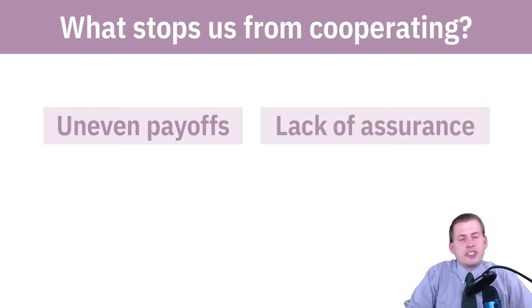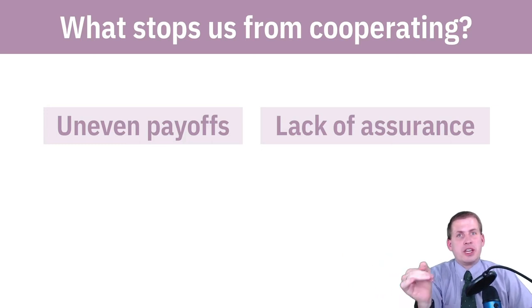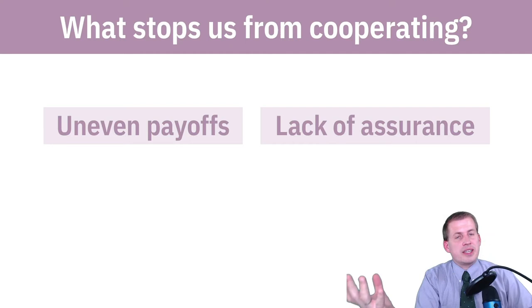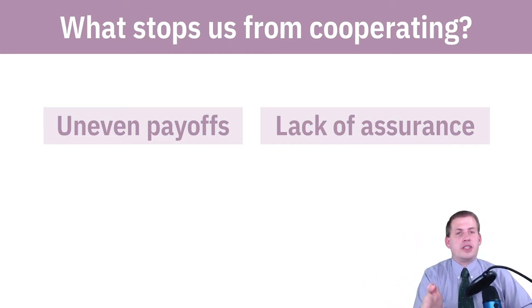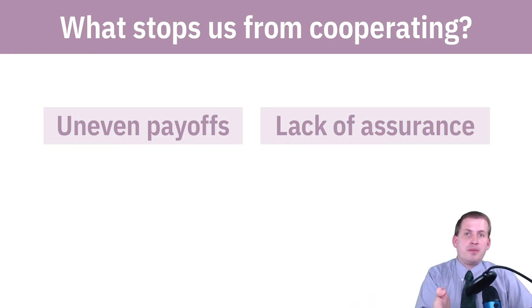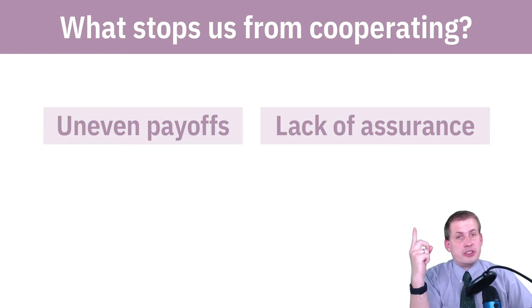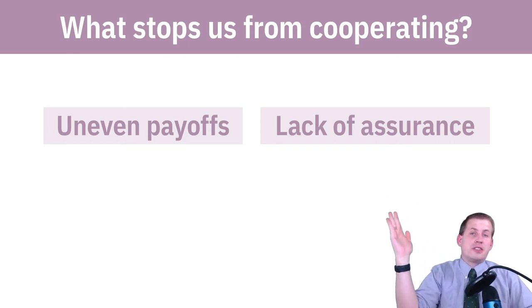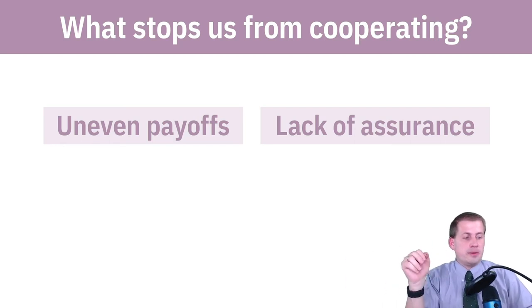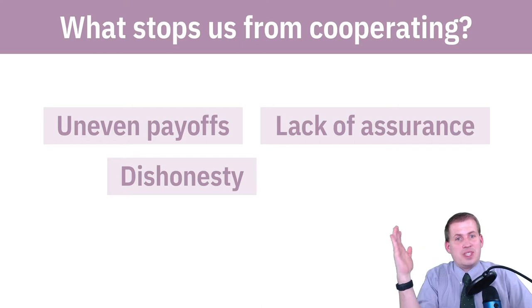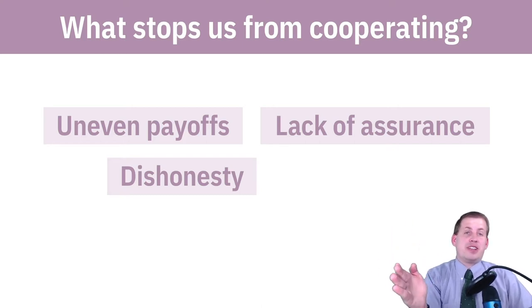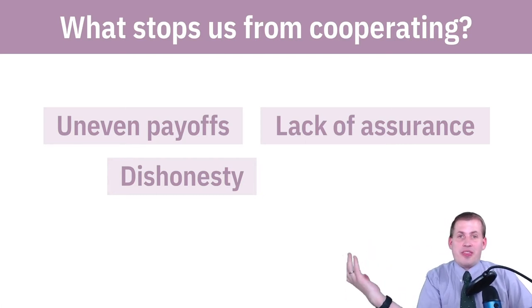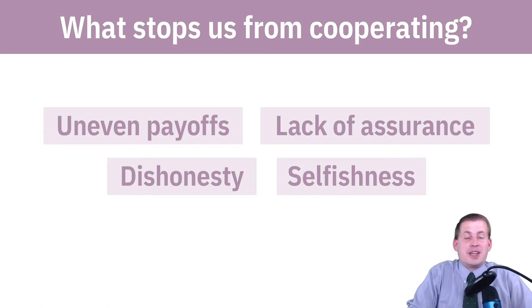Lack of assurance is the idea that if the other person says 'I'm going to meet you at a Chinese restaurant' or 'I'm really going to hunt stag' or 'I'm really going to sign this Paris Climate Accord,' you have to trust that they'll actually do it. If you can't trust them — if there's no assurance they'll follow through — you're going to defect, destroying cooperation. Dishonesty makes things worse too: if they say they'll sign the Paris Climate Accords and then don't, that also breaks cooperation.